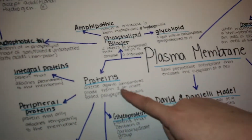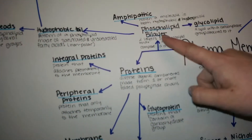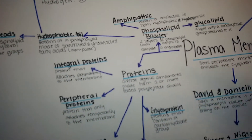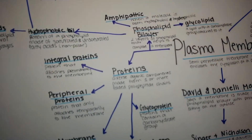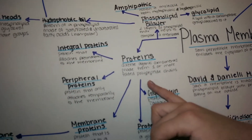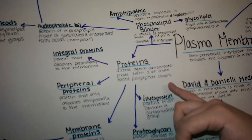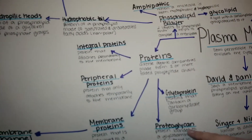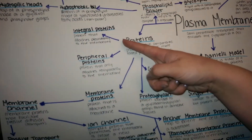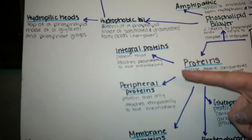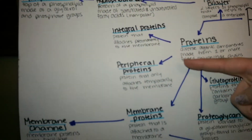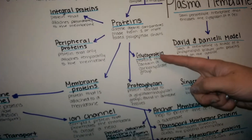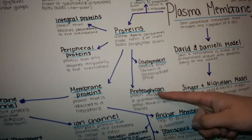Plasma membranes are made up of proteins and a phospholipid bilayer. Proteins are a diverse organic compound made from one or more folded polypeptide chains. Proteins can be broken up into several different types: integral proteins, peripheral proteins, membrane proteins, glycoproteins, or proteoglycan proteins.